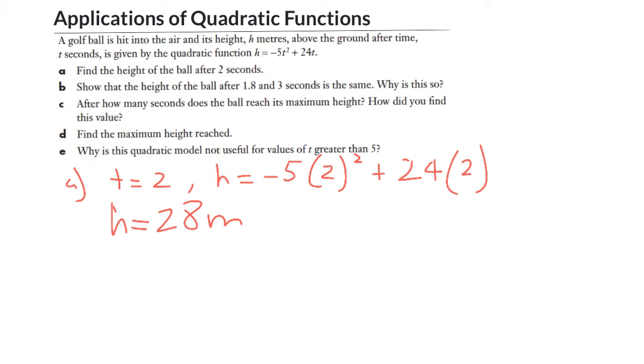Show that the height of the ball after 1.8 and 3 seconds is the same. Why is this so? Well, let's do the substitution first. So if I've got t equals 1.8, I can go and substitute that in and end up with h equals 27 meters. If I go and substitute in t equals 3, I end up with h equals 27 meters as well. Now we've just shown that they're the same.